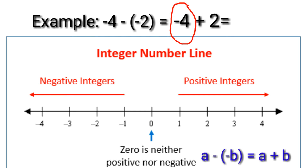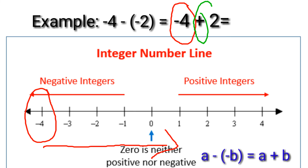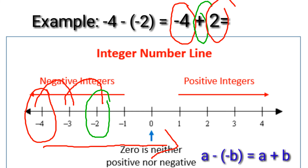Our starting point on the number line is negative 4. Since we have plus, our movement is to the right — 2 movements to the right: 1, 2. We landed on negative 2. Therefore, negative 4 minus negative 2 equals negative 2.